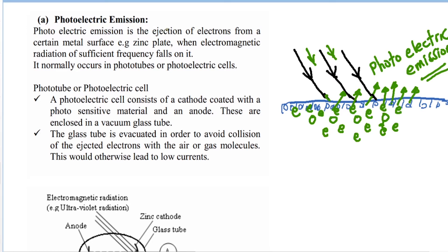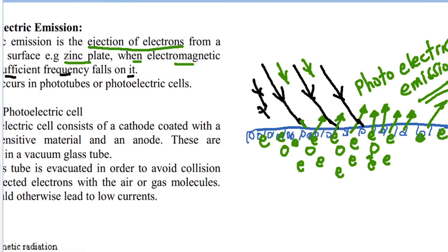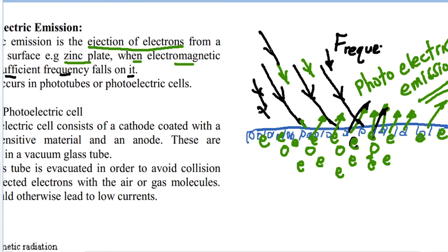Photoelectric emission is the ejection of electrons from a metal surface — like a zinc plate — when electromagnetic radiation of sufficient frequency falls on it. If the frequency of the incident radiation is not high enough, the electrons may not have the necessary energy to break free from their nuclear attraction.